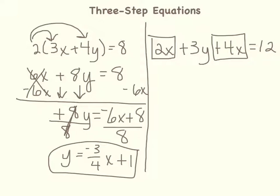So 2x plus 4x is 6x. Since I'm not doing anything with the 3y, it just comes right down. And then equals 12. Now, if you look at this, our second and third step will be just like a two-step equation.